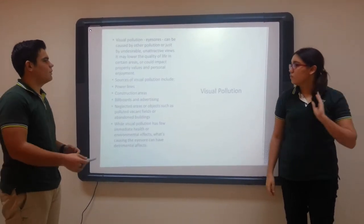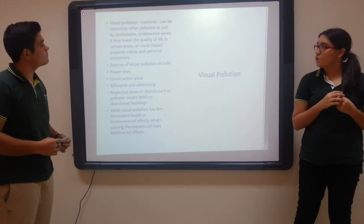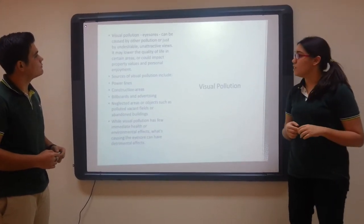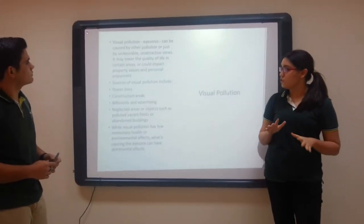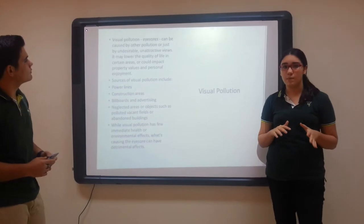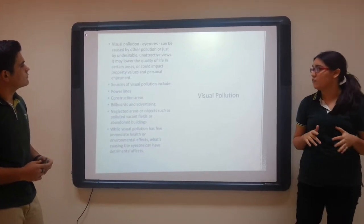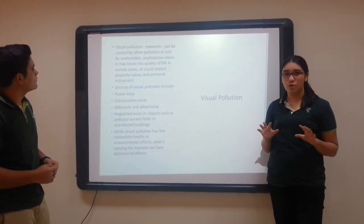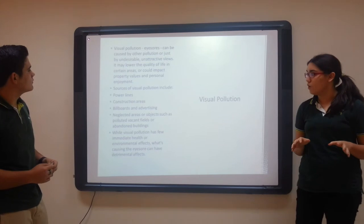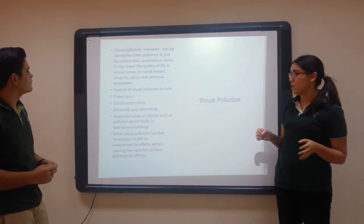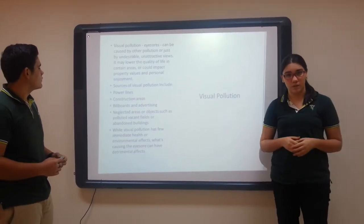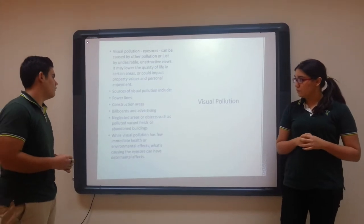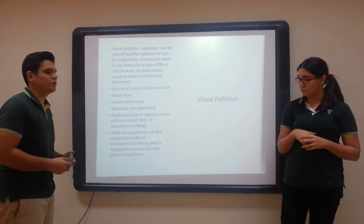Next is visual pollution. Visual pollution eyesores can be caused by other pollution or just undesirable and unappealing land use. It may lower the quality of life in certain areas or could impact property values and personal enjoyment. Sources of visual pollution include power lines and construction areas.